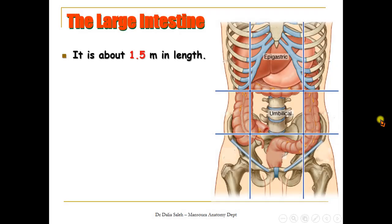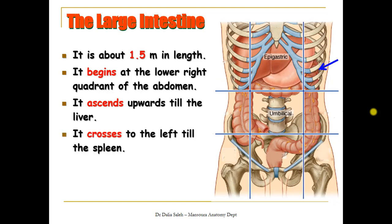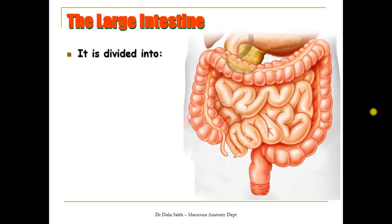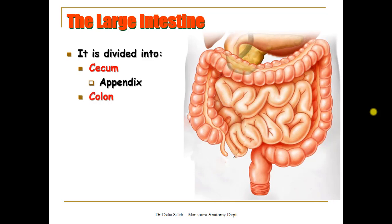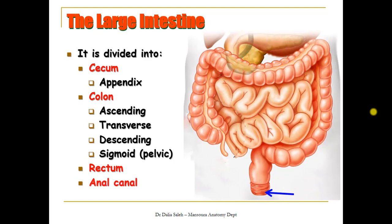The large intestine is about one and a half meters in length. It begins at the lower right quadrant of the abdomen, ascends upward to the liver, crosses the abdomen from right to left to the spleen, then descends into the pelvis and terminates at the anus. Its regions are: the cecum, the colon (divided into ascending, transverse, descending, and sigmoid or pelvic colon), the rectum, and the anal canal. A finger-like extension of the cecum is called the appendix.